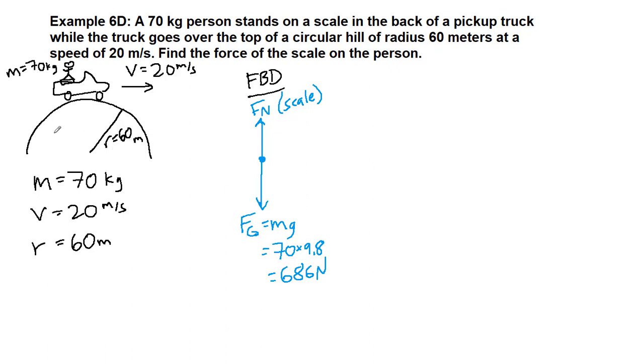However, we are going around a circular type motion. And even though this speed is constant, the velocity is constantly changing, which means there has to be an acceleration. And that acceleration is centripetal acceleration pointing towards the center of the circle, which means that scale is absolutely not reading 686 newtons. It is reading a different number value because there is a net force pointing down.